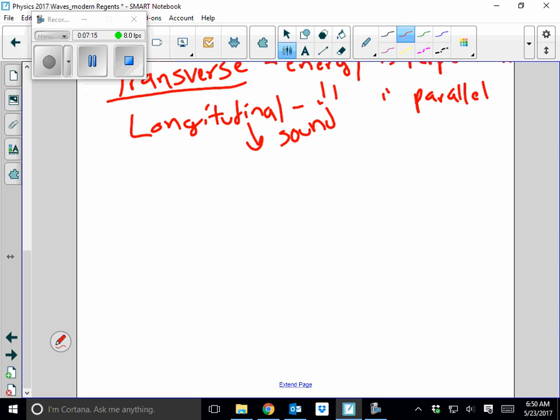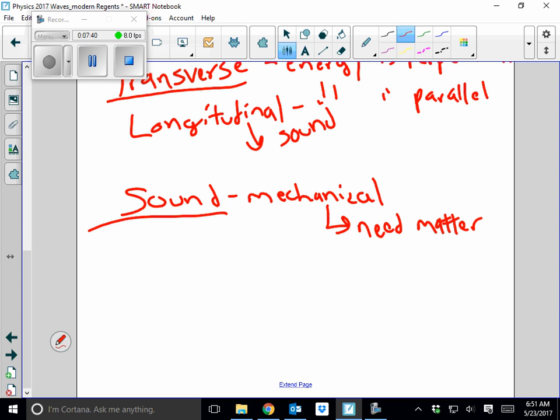A transverse type wave is light, a type of longitudinal wave is sound. So let's use that to jump into sound. Sound is called a mechanical wave. It is longitudinal and you need matter to travel through it. And that's what mechanical means. Matter matters. So sound is a mechanical wave and it is longitudinal.